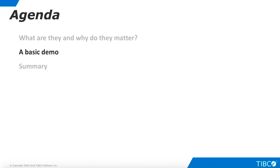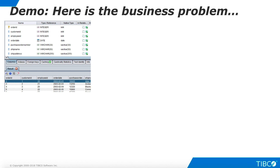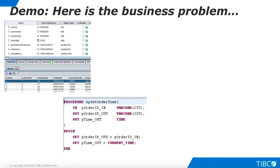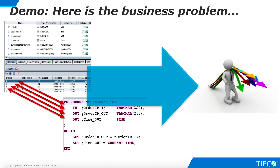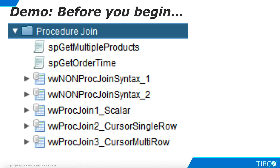Next, let's walk through a very basic demo of procedure joins. Here is the business problem that we illustrate in this demo. We start with a virtual view in TDV. We want to augment this view with data returned from a stored procedure. However, we need the stored procedure to calculate different responses on a row-by-row basis, using parameter information from each row. We want to publish the augmented data as a simple view that can be consumed by a business analyst. You can easily build the artifacts used in this demo from scratch. However, all users can install the car file available in the DemoAt repository.